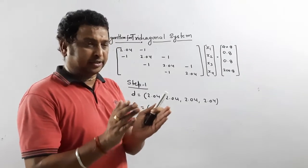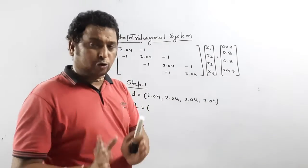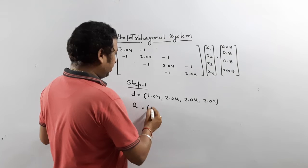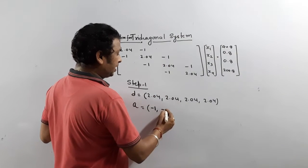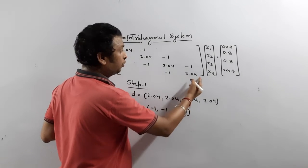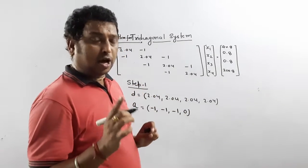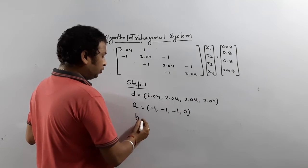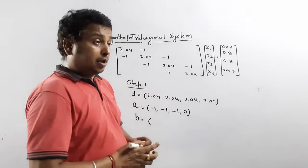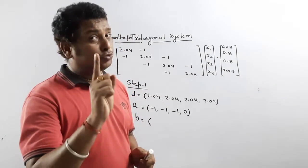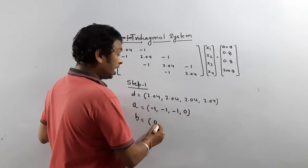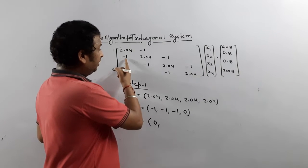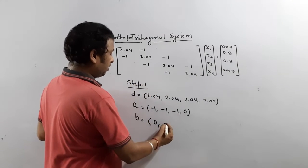For a 4x4 matrix, the upper diagonal values are A1, A2, A3, and A4 is always 0. If it is a 3x3 matrix then A3 will be 0; if it is an N×N matrix then An will be 0. So A1 = −1, A2 = −1, A3 = −1, and A4 = 0. For the lower diagonal, it is defined by B. The first value B1 is always 0. Then B2, B3, B4 follow.